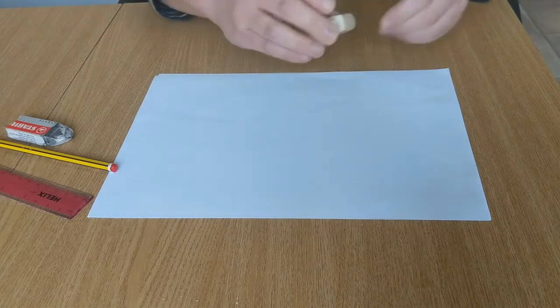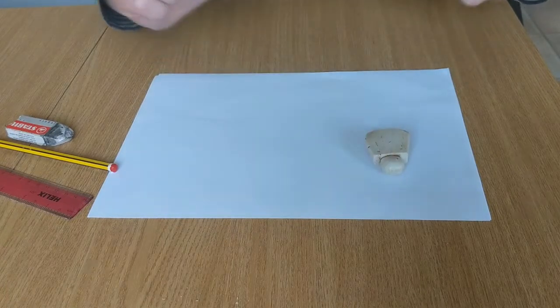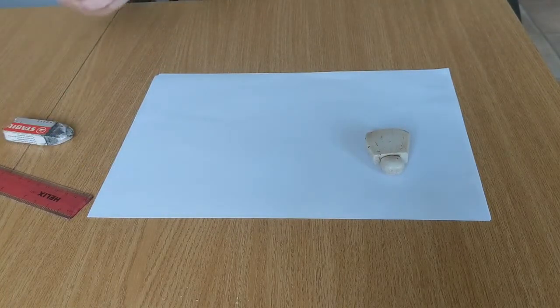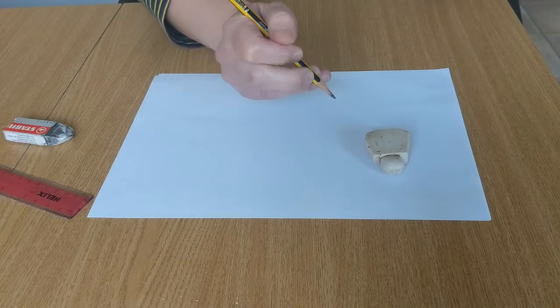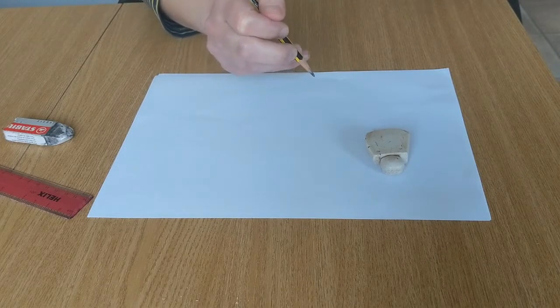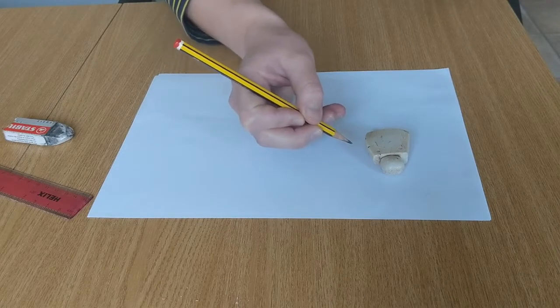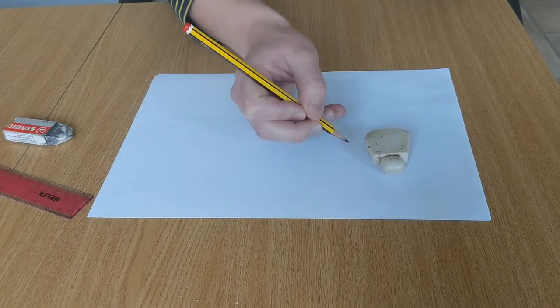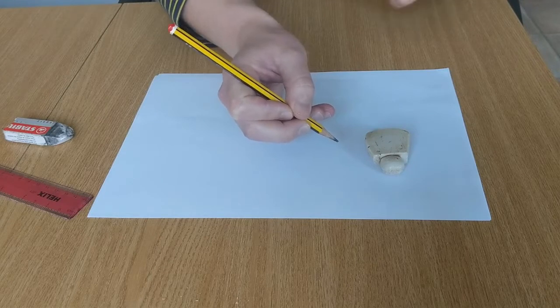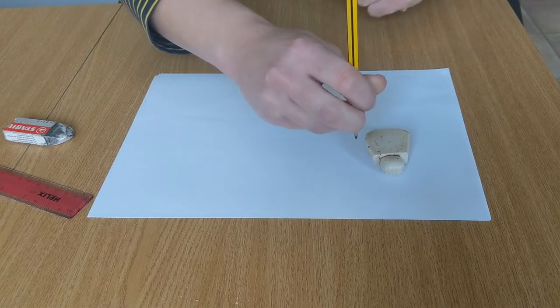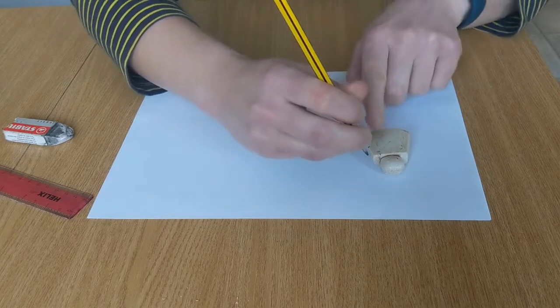So the first thing you want to do: get your piece of paper, pop your object down, lay it flat, and then you want to use your pencil to dot around the object to create your outline. Now make sure you don't hold your pencil so it's slanting underneath, because we want to have this as an accurate measurement of the actual object, so it needs to be as vertical as you can get it.